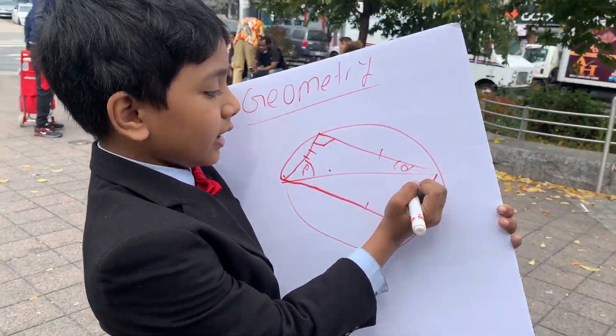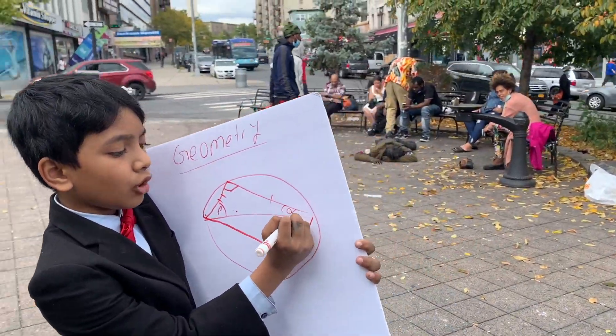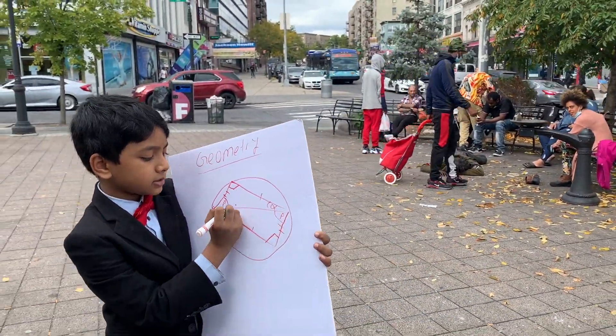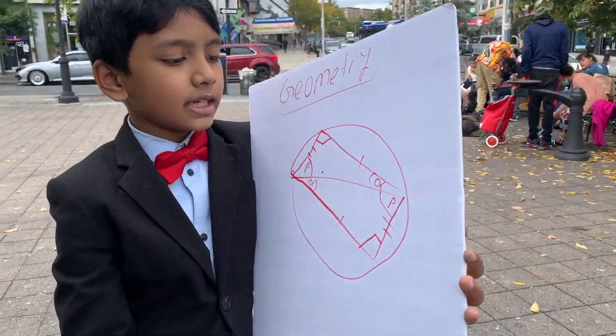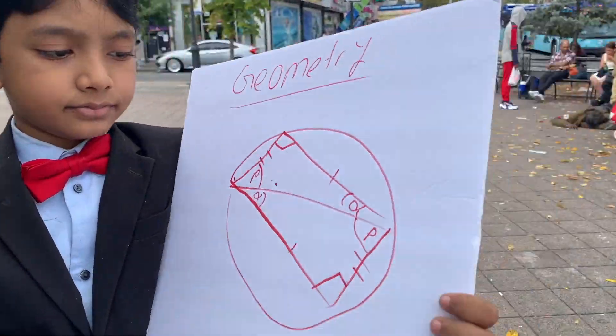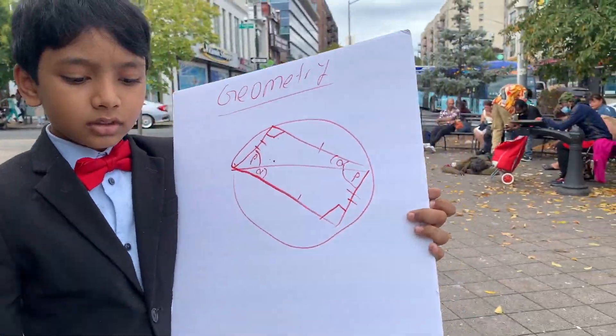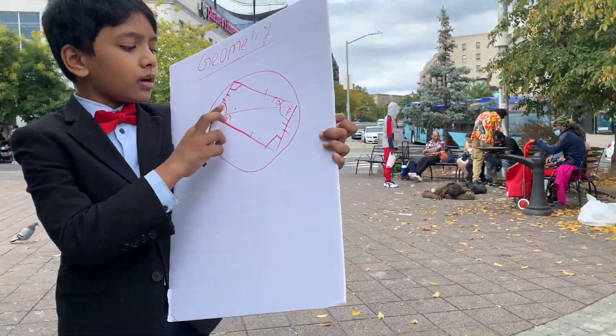Indeed they do. How? Well, due to Thales' theorem, the green and orange angles must add to 90 degrees. Thus, that gives us a rotated rectangle.